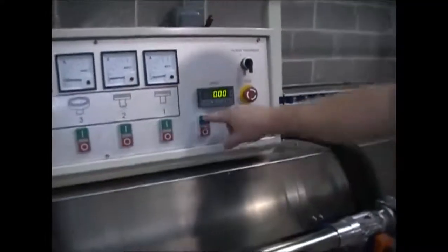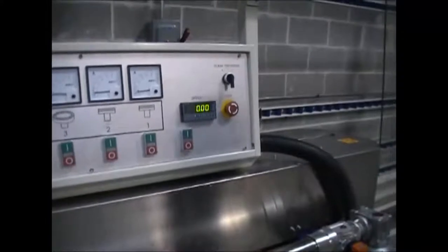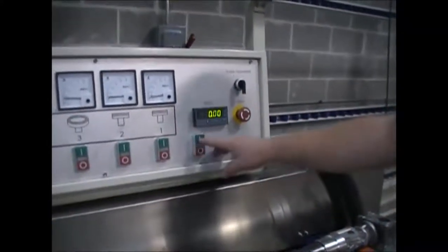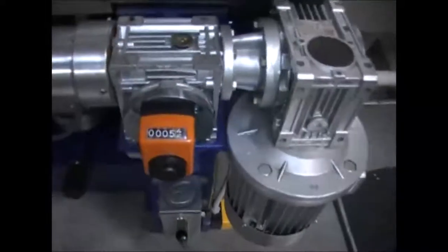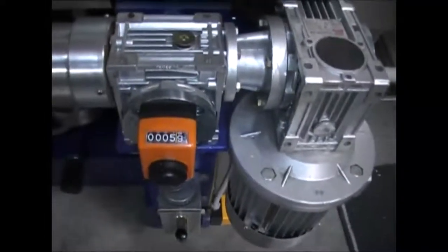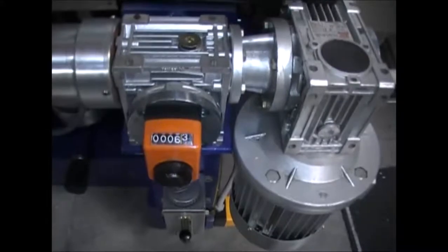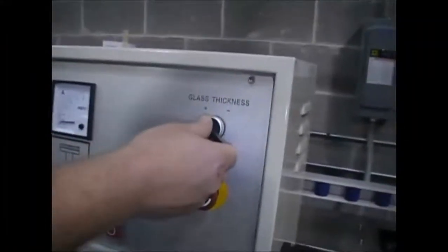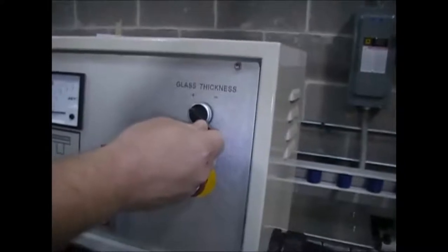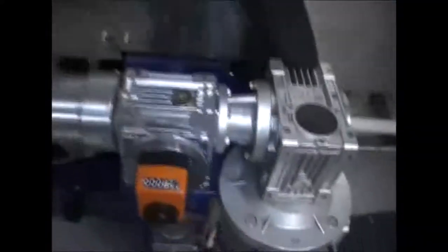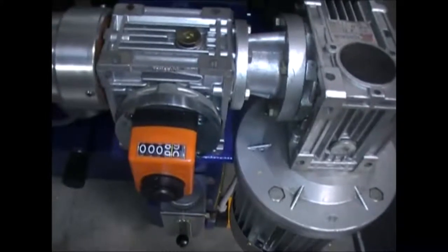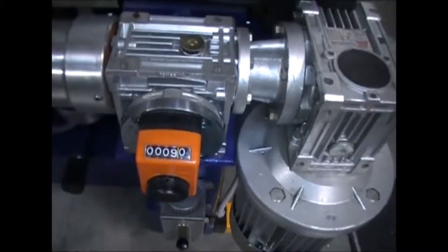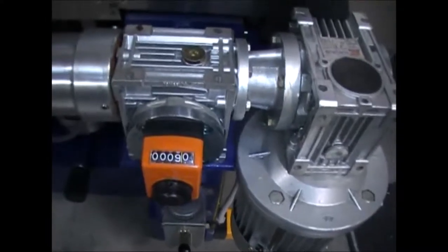To change from quarter inch, which is set at five millimeter, to three-eighths, which is set at nine millimeter, it's that simple. You just increase the thickness with a motorized switch. Hold it on the positive till it reaches nine. That's it. Now you can run your three-eighths through after you just ran your quarter inch.